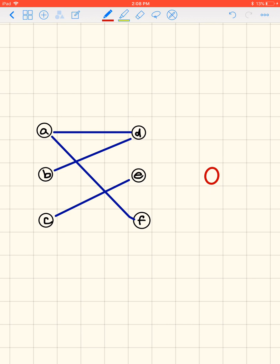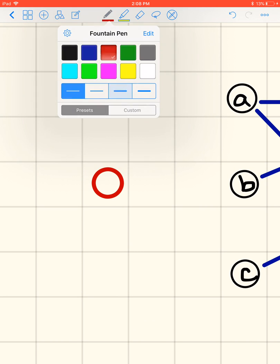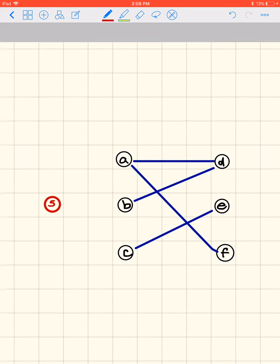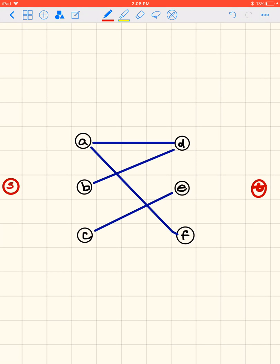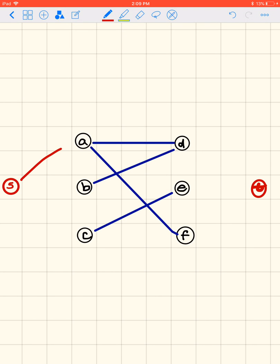We're going to add a source and a sink. So the sink will be T as usual and the source will be S as usual. And we're going to add an edge between the source and every vertex in the first part and an edge between the sink T and every vertex in the second part or partition.